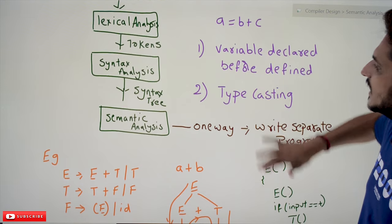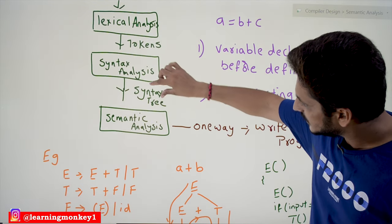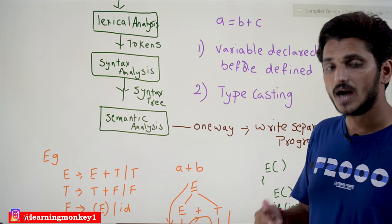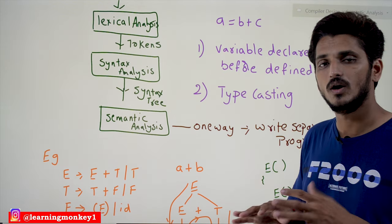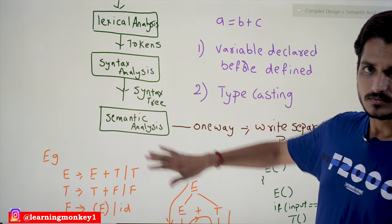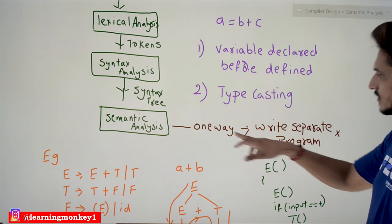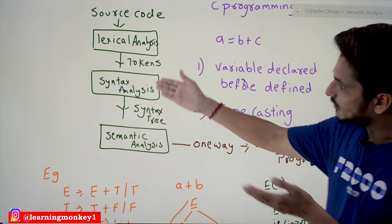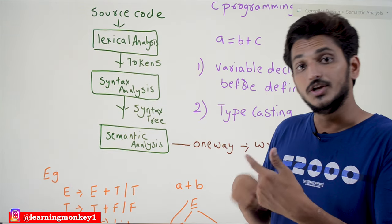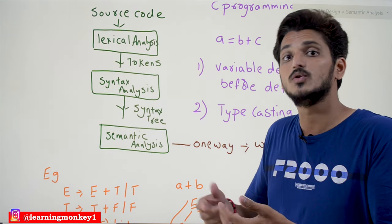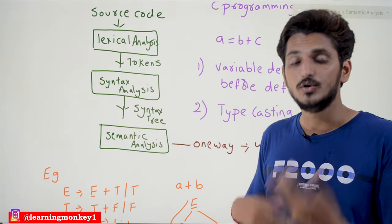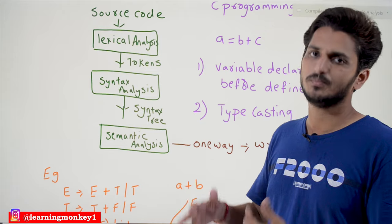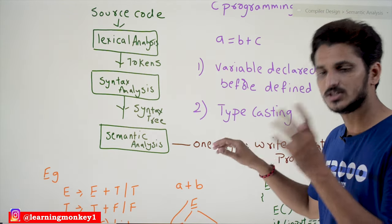To perform semantic analysis, one way is to take the syntax tree output from the syntax analysis phase and write a separate program to check the semantic conditions. However, most implementations do not follow this approach. Instead, based on the program written in the syntax analysis phase, we check the semantic conditions during the execution of syntax analysis. The next class will provide examples of how to write those conditions.